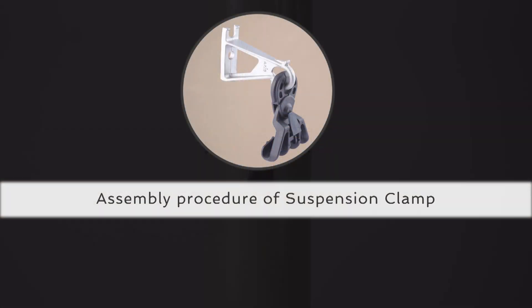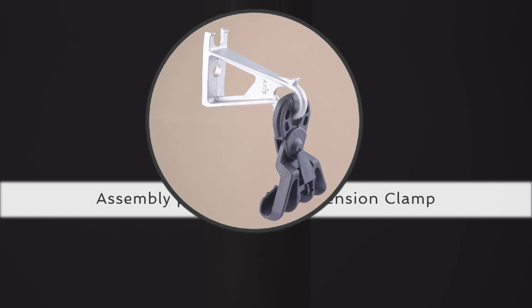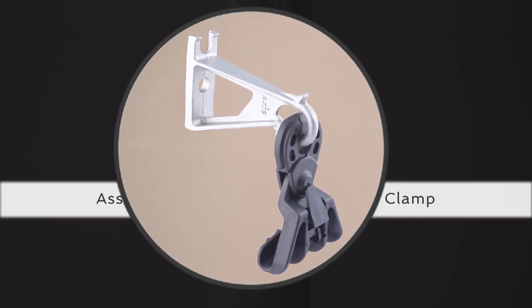Note that generally the suspension clamp is factory assembled along with the bracket. In cases where it is disassembled, simply follow the correct assembly procedure as follows.